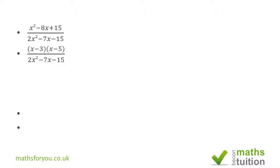The denominator presents more of a challenge. I list the factor pairs of the coefficient of x², which is 2 — giving 2 and 1 — and the factor pairs for -15: either (3, -5) or (-3, 5). We wouldn't use ±15 and ∓1 because 2×15 = 30, which is too large. So the candidate factorizations are (2x+3)(x-5) or (2x-3)(x+5).